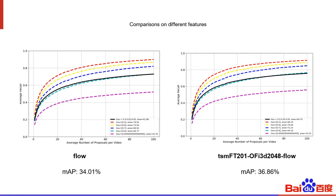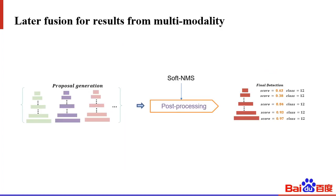Two-stream work on optical flow has been proven helpful for action recognition. We extracted optical flow using the algorithm and then used the TSM model fine-tuned on HACS to extract features from optical flow images, obtaining 34.01% in action detection. For the late fusion, we collected all generated proposals from different features and adopted soft NMS as post-processing to generate the final result.